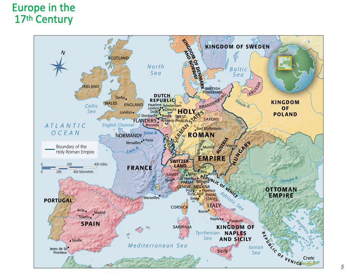In 1648, after decades of continuous border disputes with the Spaniards, the Northern Netherlands achieved official recognition as the United Provinces of the Netherlands — the Dutch Republic. The new independent Republic owed its ascendance largely to its success in international trade. Dutch ships laden with goods roamed the world, sailing as far as North and South America, Western Africa, China, Japan, and the Pacific Islands, spreading prosperity to a greatly expanded middle class.